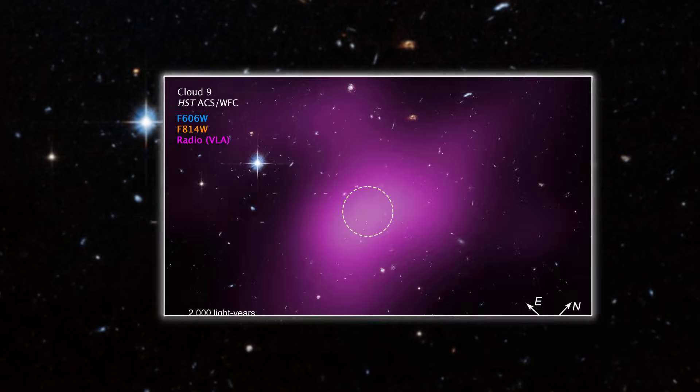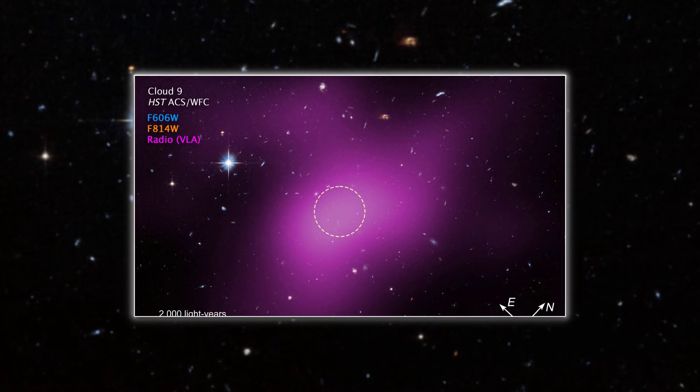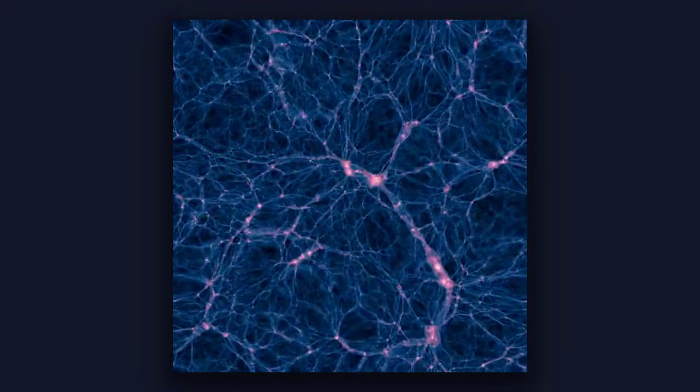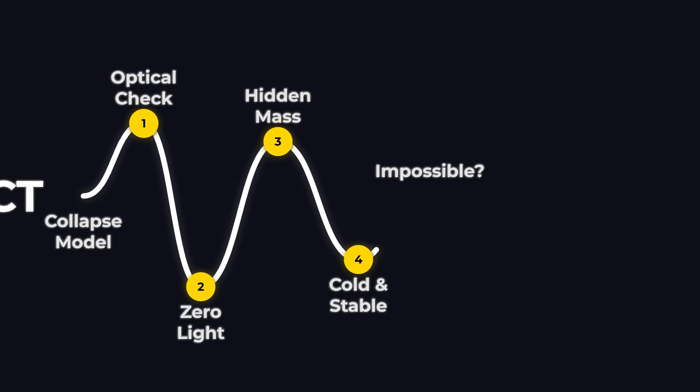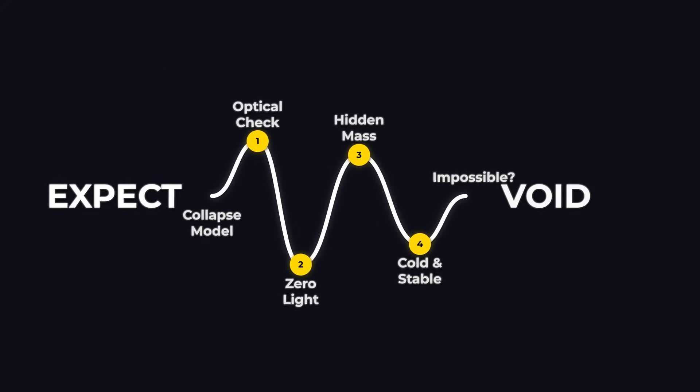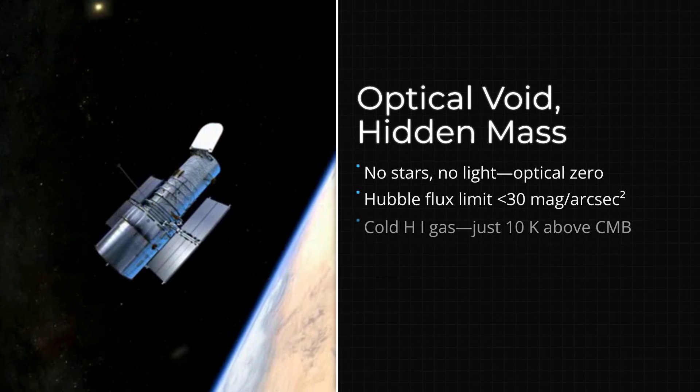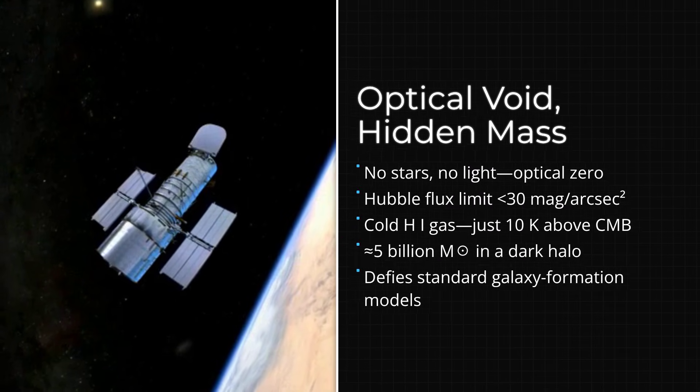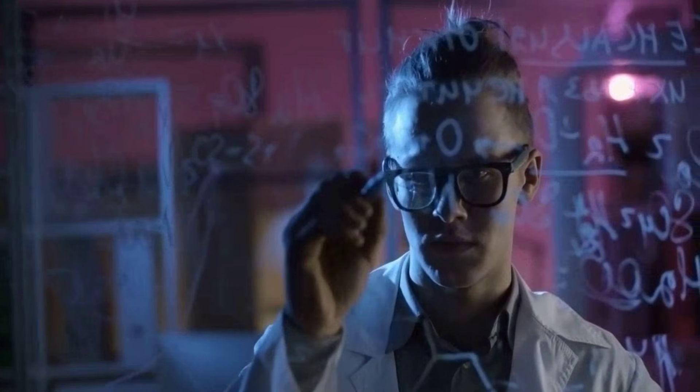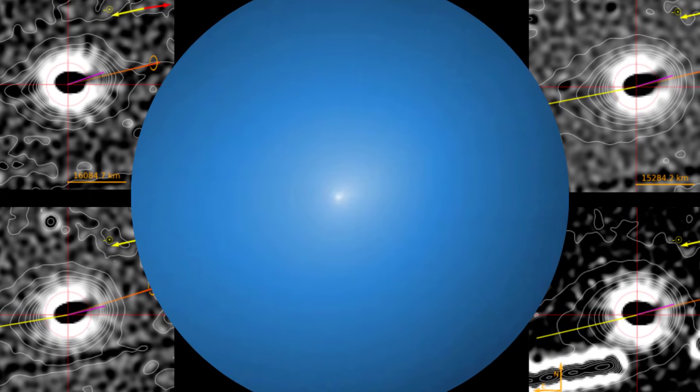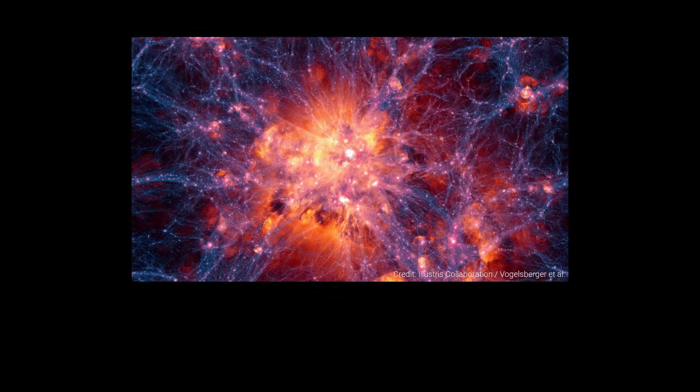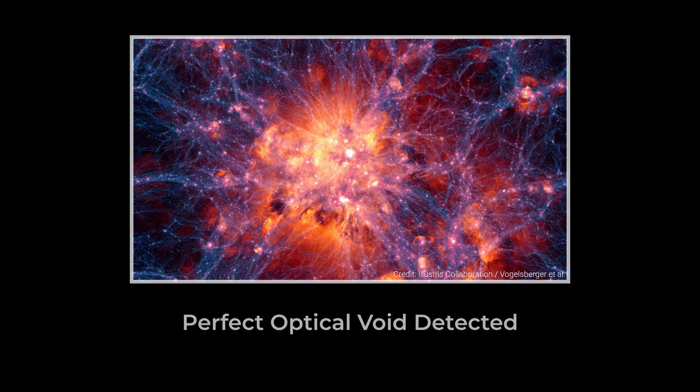If not for its hydrogen fingerprint, it would have been invisible to every telescope on Earth. The finding posed a direct challenge to standard expectations. With this much gravity, the cloud should have collapsed, ignited, and built stars long ago. Instead, it remained a perfect ghost: massive, cold, dark, and stable. The mystery was no longer about detection, it was about explanation. How does a structure this heavy and this empty persist? And what kind of theory can account for such a silent anchor in the cosmic web?